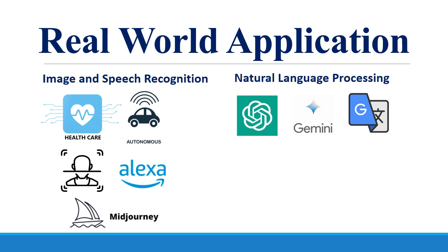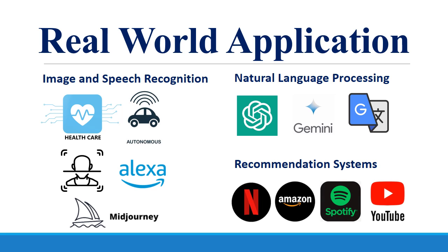Google Translate is another example that can support a lot of languages. Recommendation systems aim to recommend you movies, videos, music, books, or products — you will find their applications on platforms like Netflix, Amazon, Spotify, and YouTube.